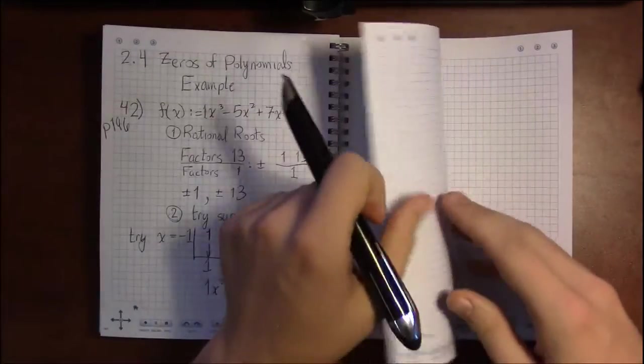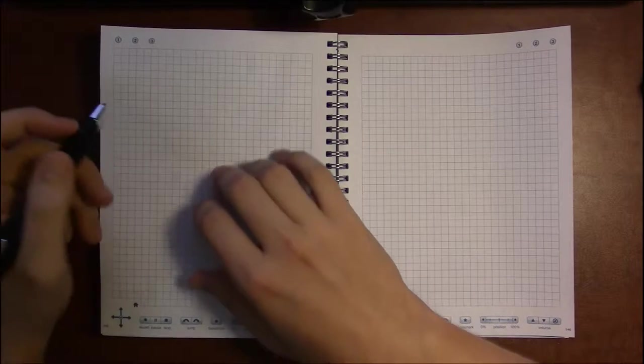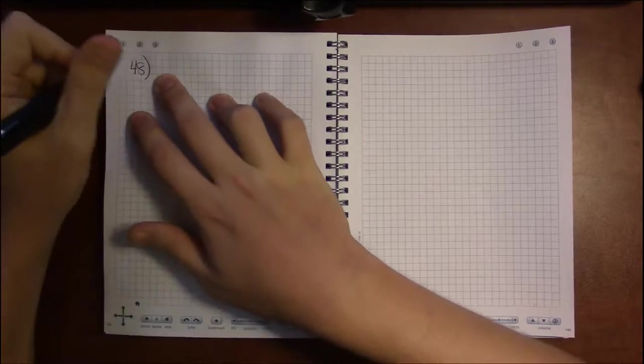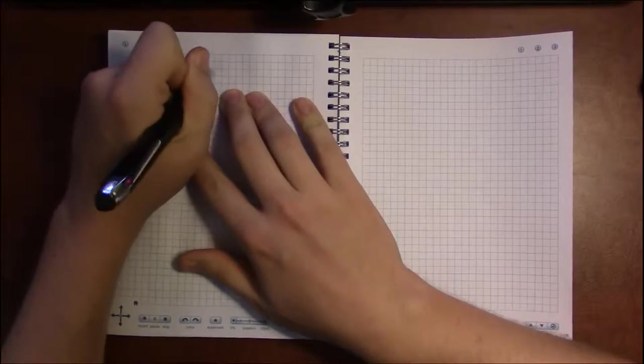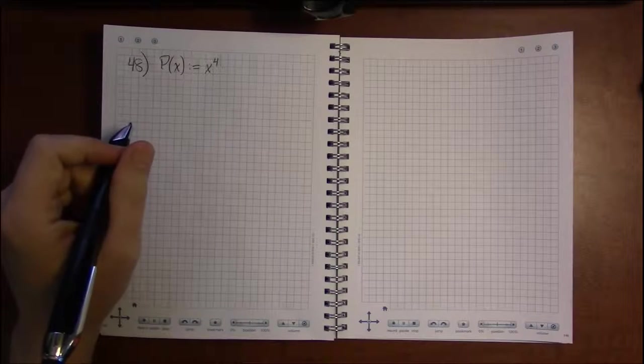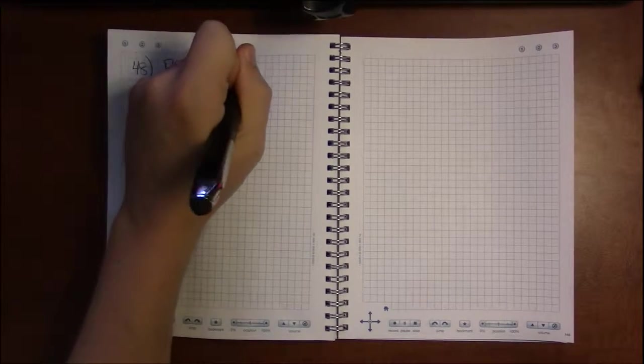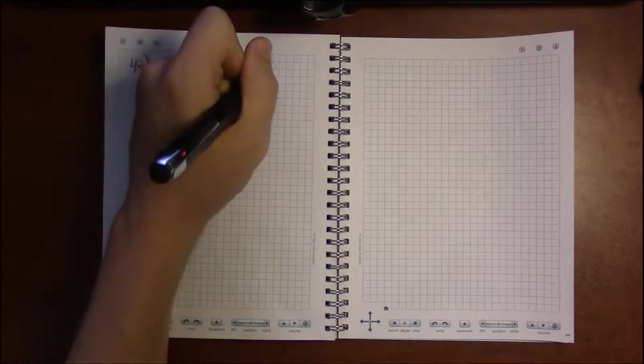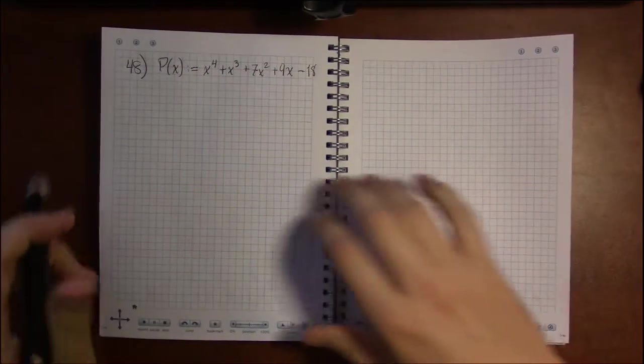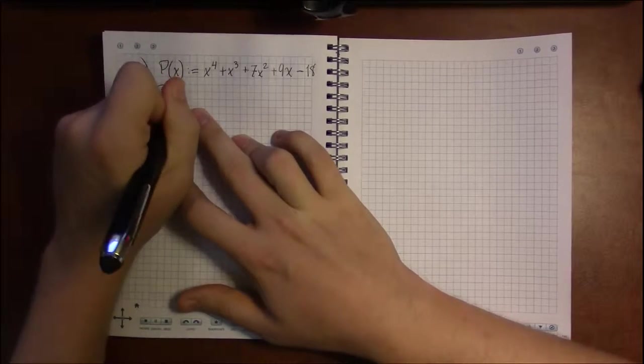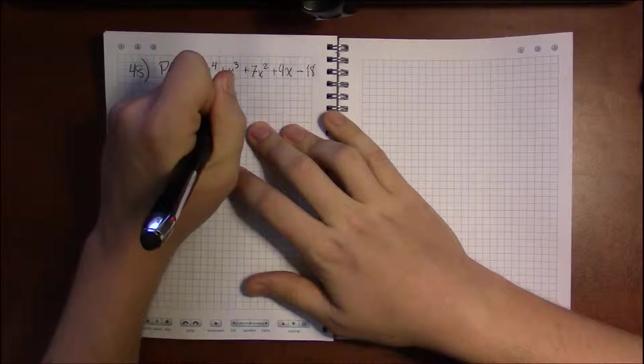Let's try another one. I want a 4th degree polynomial. We're going to start with x to the 4th. On problem 48, we have x to the 4th plus x cubed plus 7x squared plus 9x minus 18. We're going to start off by finding the nice roots, the roots that are nice fractions, or at least nicer than things with square roots and i's in them.